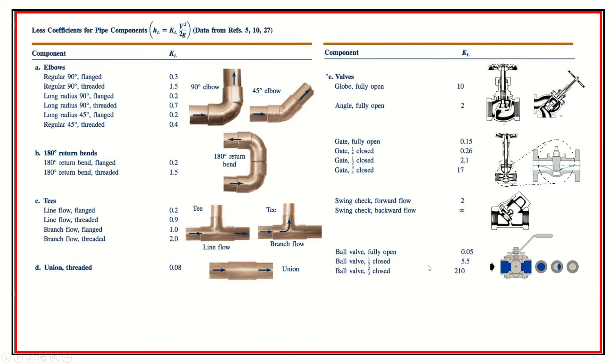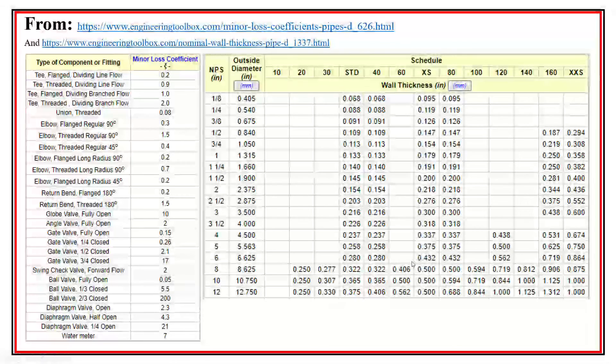Swing check valve obviously, going in the reverse direction, it's got an infinite KL because it doesn't allow flow to go in the wrong direction. But it still has a bit of a flow restriction because of the flow having to go by this gate that the swing has swung up and out of the way. It still has a restriction. And we have a ball valve that too is not a very good means of throttling. As you can see, two thirds of the way closed is 210 compared to one third of the way closed.